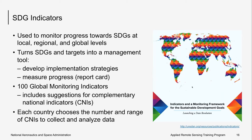Indicators will be the backbone of monitoring progress towards the SDGs at the local, national, regional, and global levels. A sound indicator framework will turn the SDGs and their targets into management tools to help countries develop implementation strategies and allocate resources accordingly, as well as a report card to measure progress towards sustainable development. Each level of monitoring requires different types of indicators, including 100 global monitoring indicators decided upon based on discussions within a large number of national statistics offices. Each country should pick the number and range of complementary national indicators that best suit their need and capacity to collect and analyze data.